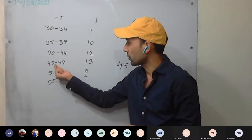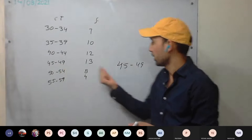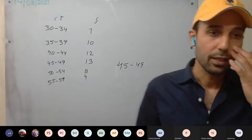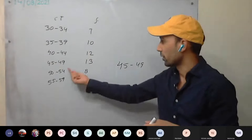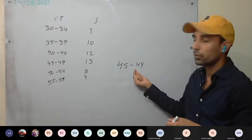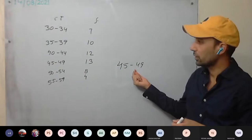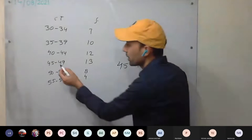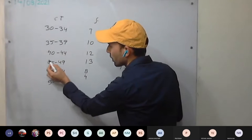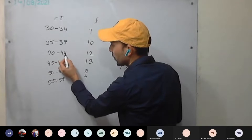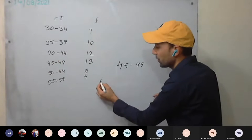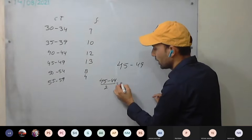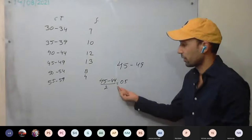You can see that 44 ends and then 45 starts, so 45 to 49. To make them exclusive, we need to find the adjustment factor. The adjustment factor is (45 minus 44) divided by 2, which equals 0.5.